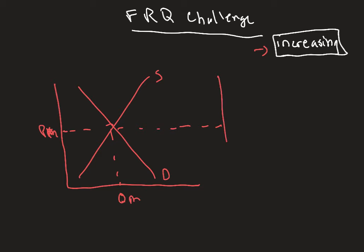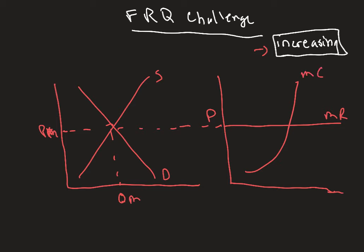The firm, which is a price taker, takes a price which is going to be the firm's MR curve — also equals the price. Remember, MR equals demand equals average revenue equals price (Mr. DARP). This is the marginal cost curve. And if it's in the long run, this firm will have an ATC curve shaped like a bowl. We note the minimum point where MC intersects ATC at its minimum. We can also label the quantity and price for the firm.